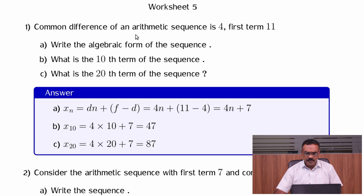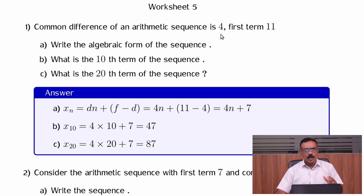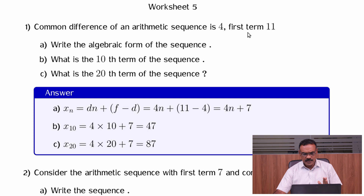The common difference of an arithmetic sequence is 4. For this arithmetic sequence, given the common difference and the 1st term level,